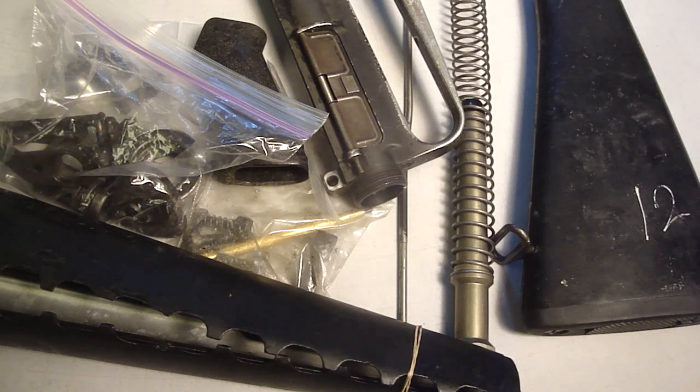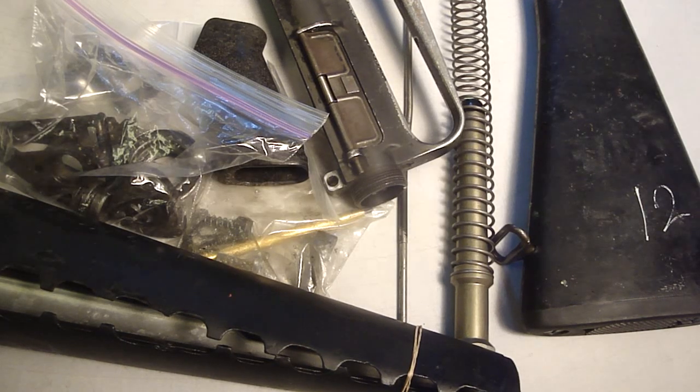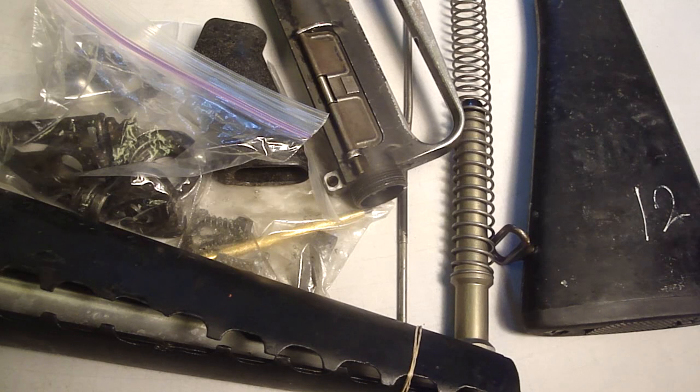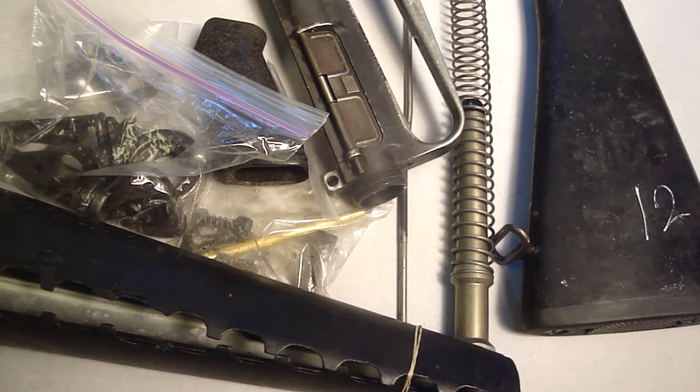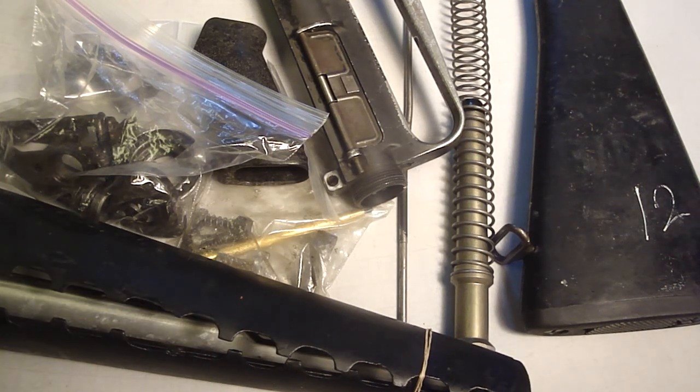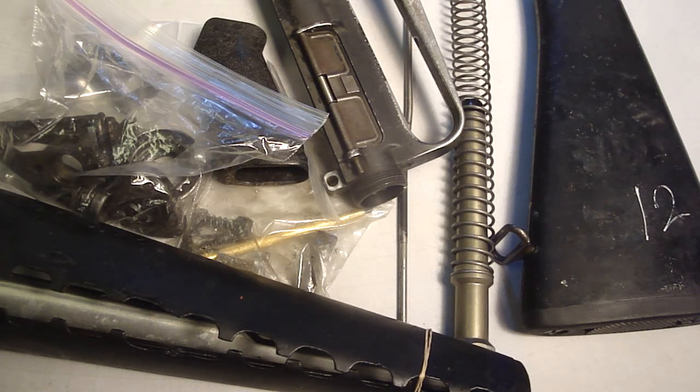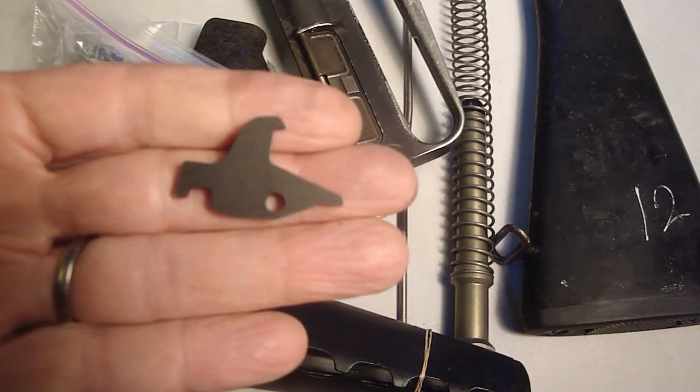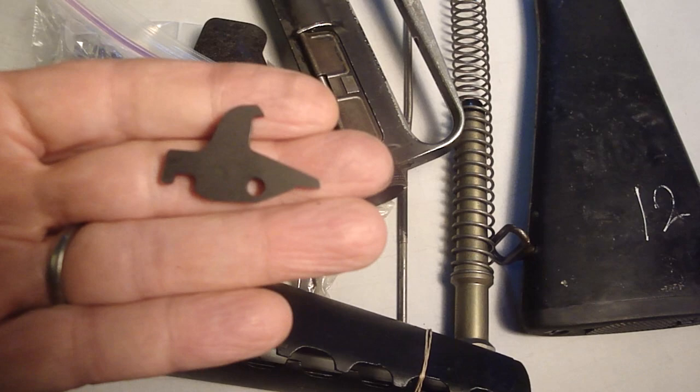So in order to repair this rifle, I pretty much have to replace what was missing from the kit. The kit was missing a barrel, was missing the sear, and it was missing the lower receiver. Not long ago I did a repair on an AR-15, it was a Bushmaster, and I replaced the trigger, so I had a leftover sear from that that I'm going to add to this kit.